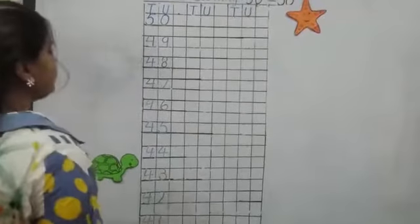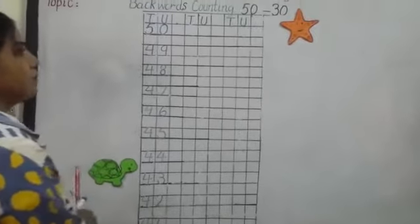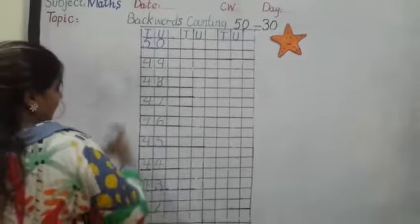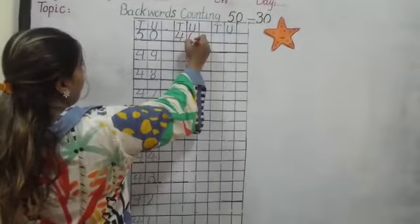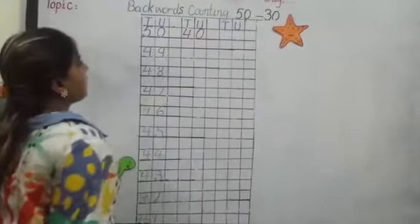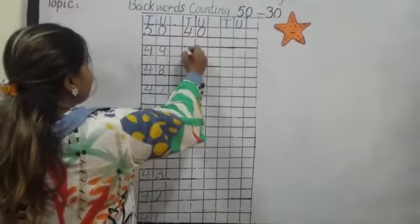And students, tell me, what comes before 41? What comes? Yes, there will come 40. 4, 0, 40. Then we will write before 40? Yes, 39.